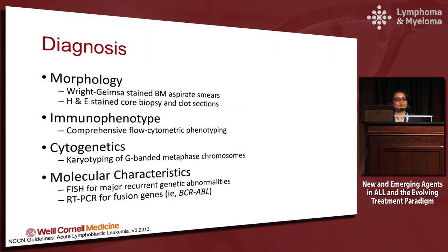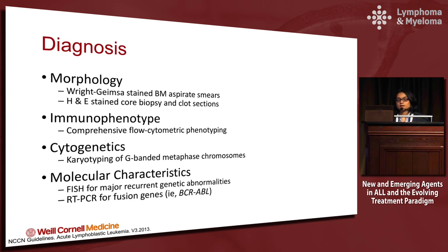The diagnosis of ALL is made by looking at the morphology, immunophenotype, and cytogenetics. Under the molecular subcategory, it's important to recognize PCR-able positive or Philadelphia chromosome positive ALL, as well as FISH for any recurrent genetic abnormalities that are present in newly diagnosed ALL.